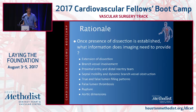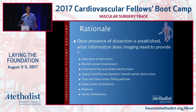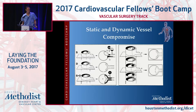What is the rationale of treatment? Once a dissection is established, you need information from your imaging modalities: the extension of the dissection, which branch vessels are involved and how, proximal and distal entry sites, septal mobility and dynamic branch vessel obstruction, true and false lumen filling patterns, false lumen thrombosis — partial false lumen thrombosis is linked to poor outcomes — rupture, and aortic dimensions.